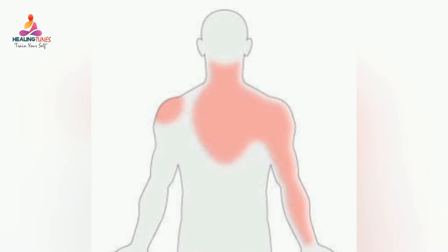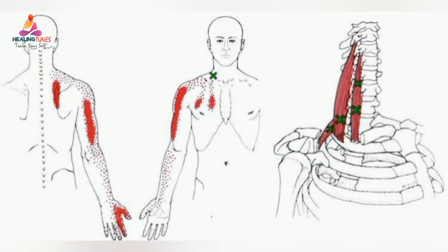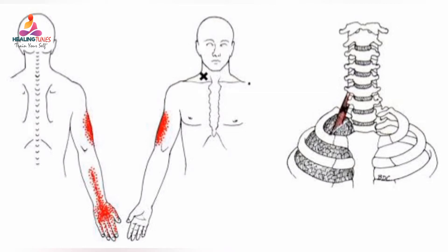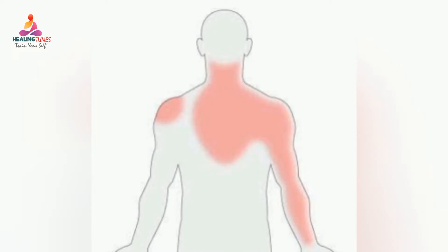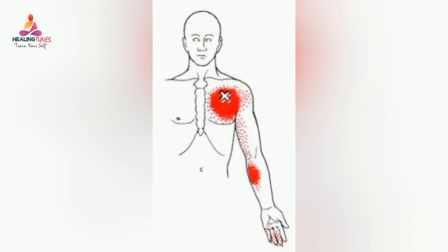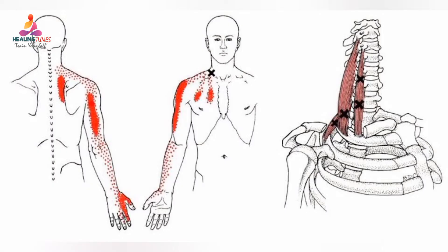In a large number of cases, trigger points in the pectoralis major, pectoralis minor, scalene, iliocostalis, sternalis, and subclavian muscles may cause these trigger points. These trigger points may typically cause pain and painful symptoms that can mimic quite closely some of the symptoms often associated with heart failure, such as pain in the centre of the chest and diffuse pain through the shoulder and down the arm.